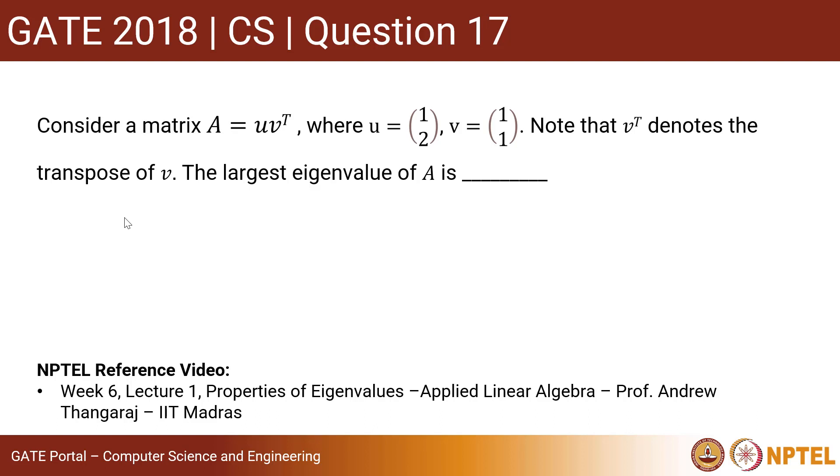The question states that: consider a matrix A equals to uv transpose, where u is a column vector (1, 2), v is a column vector (1, 1).